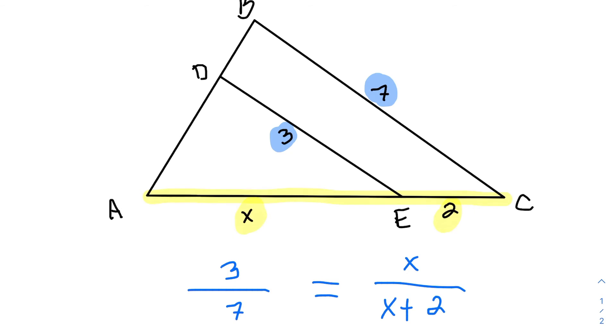And so that's the hard part with similar triangles is getting that initial proportion set up. Once we have the proportion set up, we're going to cross multiply.